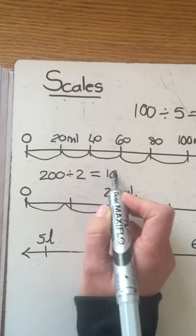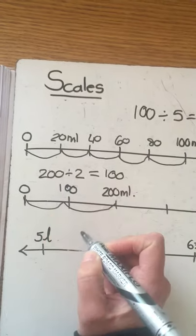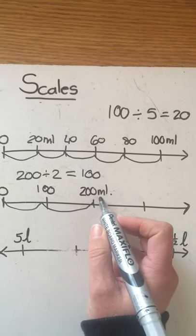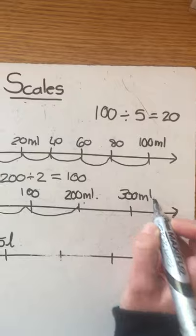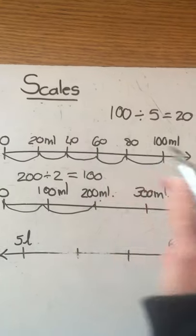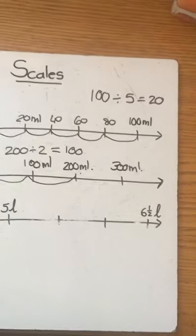So that means this is 100 milliliters. That's 200 and the next one will be 300. Remember to write the units. I didn't write milliliters for all of them just because I don't have enough space.